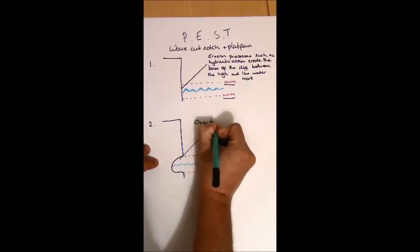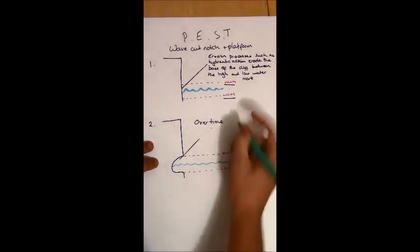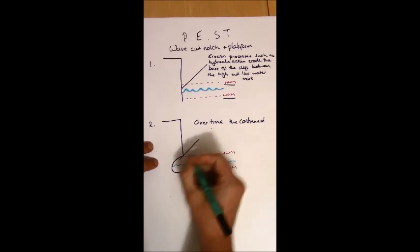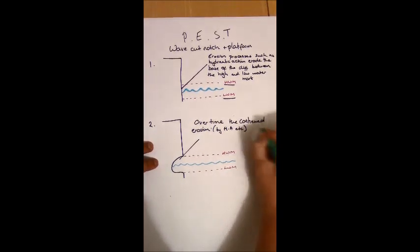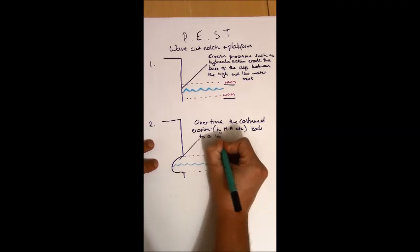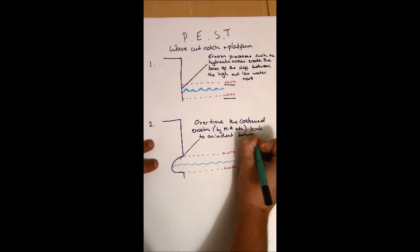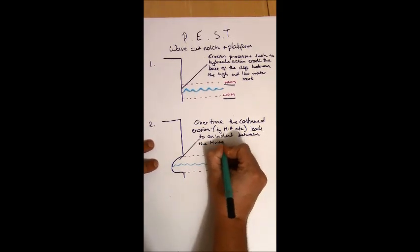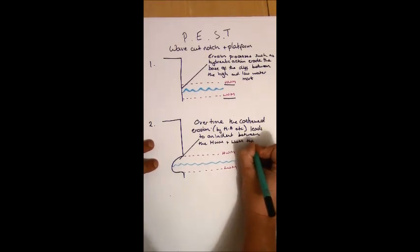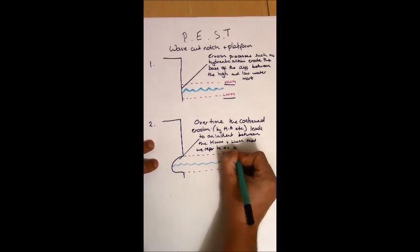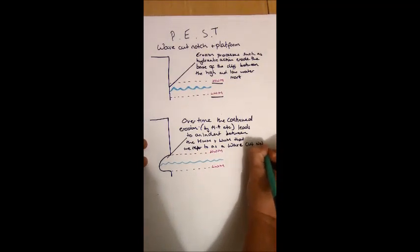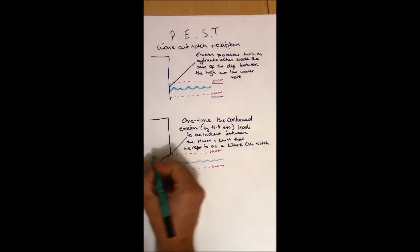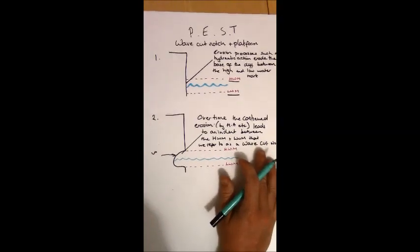So we can say: over time — getting that T from the PEST structure — the continued erosion by hydraulic action, et cetera, leads to an indent between the high water mark and low water mark that we refer to as a wave cut notch. I can label that on the diagram to emphasise it.